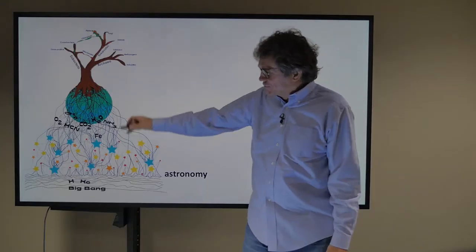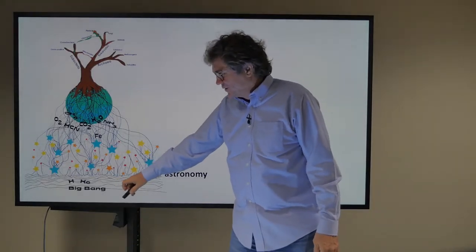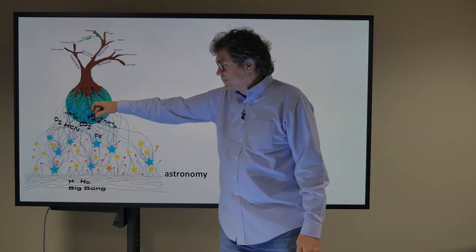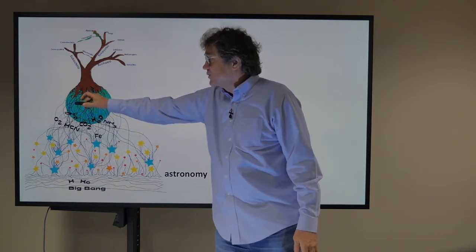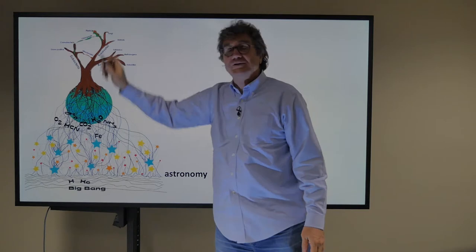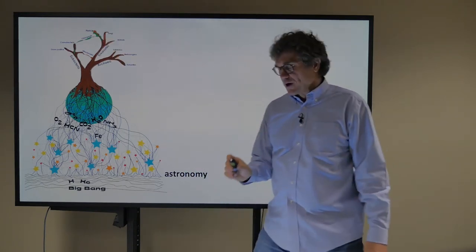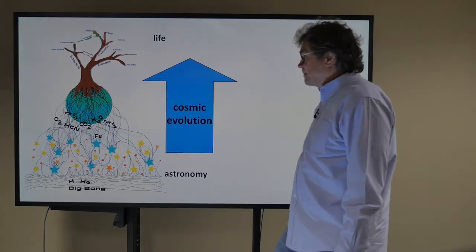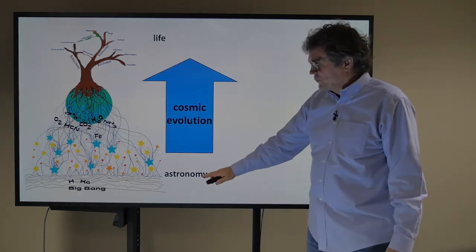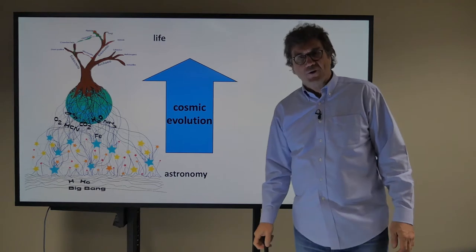So here's the universe. It starts with the Big Bang and hydrogen and helium make stars, the stars make some planets. On Earth, life got started and then it has evolved in these various directions. And here we are, the animals, and we're a tiny branch here, and we think we're complicated. Now, there's cosmic evolution that started with astronomy and produced life on Earth.